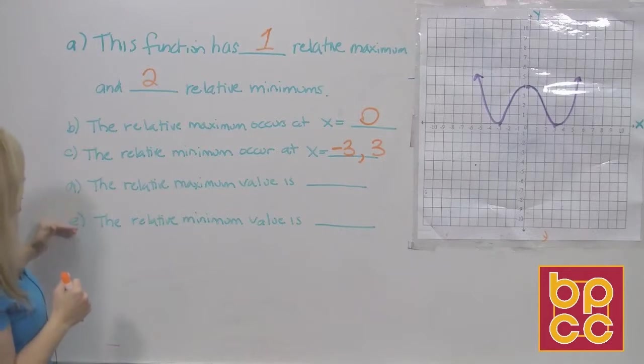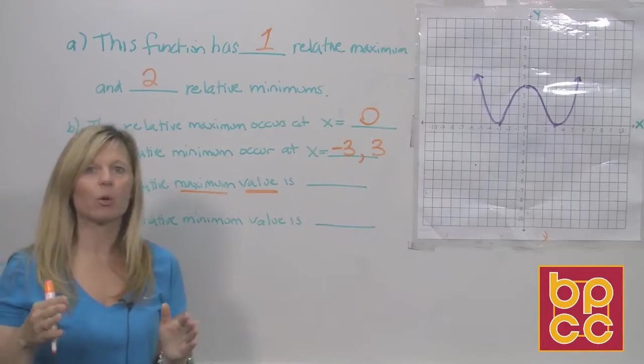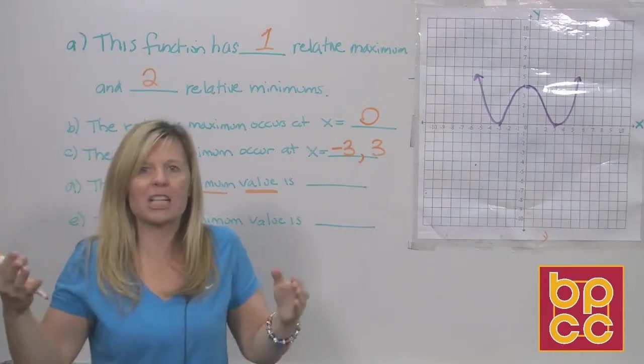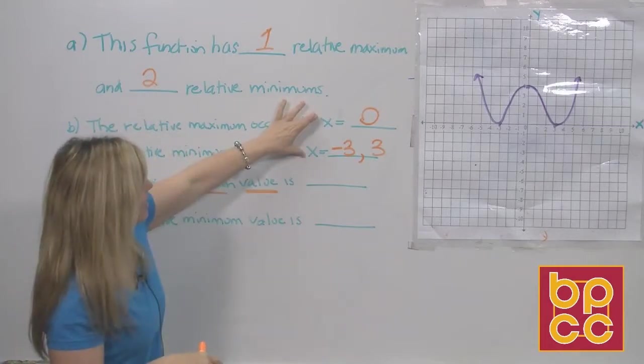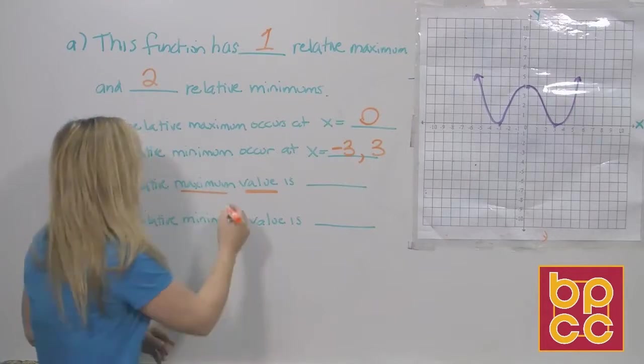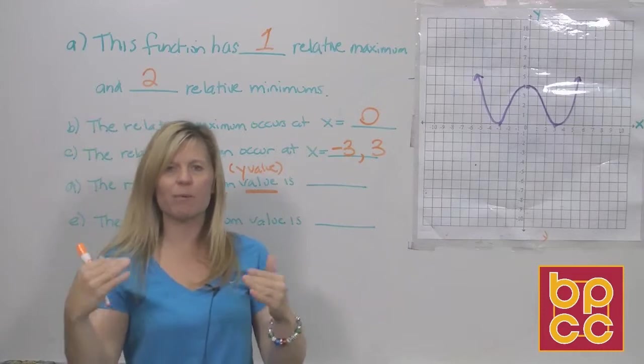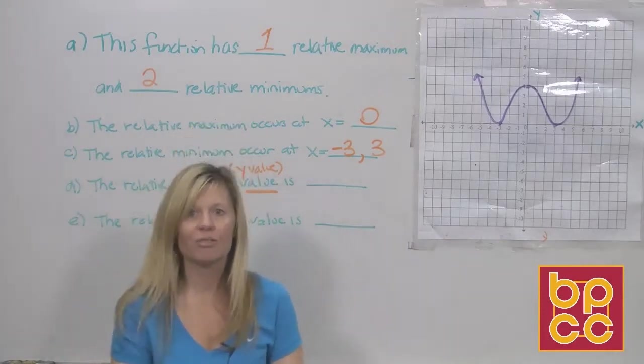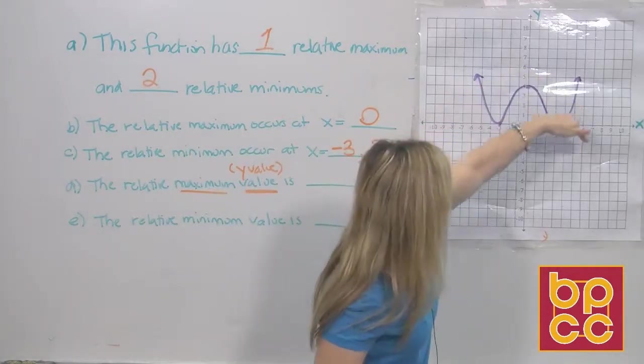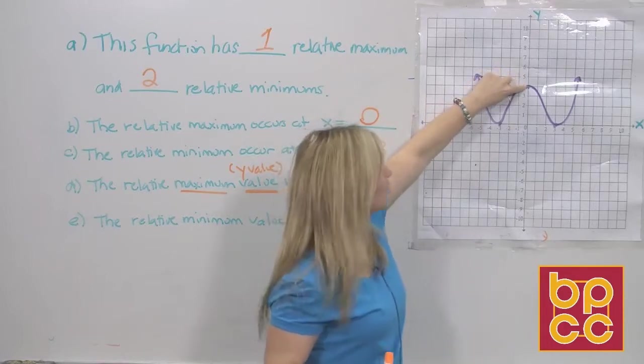Our last set of questions say, the relative maximum value. Now, remember, the word value in math means a number. What is the maximum value? Well, you've already given me the x values. So what do you think I want here? Very good. I want the y values. When they ask for the maximum value, they want to know the highest value y is for this curve. And according to this graph, the highest value we know is right here. And its y value is at four.